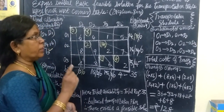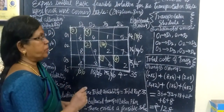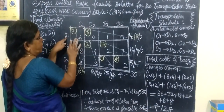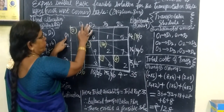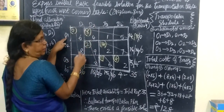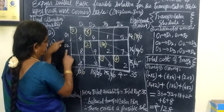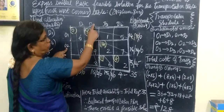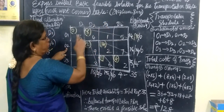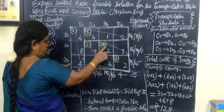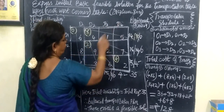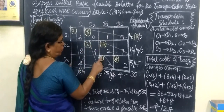Now write the transportation schedule. Starting from the first row: cell O1D1, then O1D2 — that is the first two allocations. Third allocation: O2D2. Fourth: O2D3. That is four allocations. Then O3D3 and O3D4. So there are 6 scheduled routes in total.